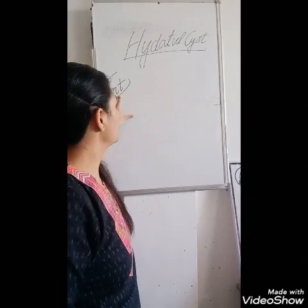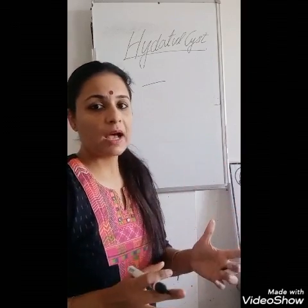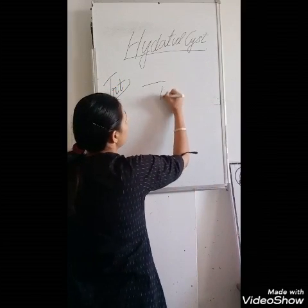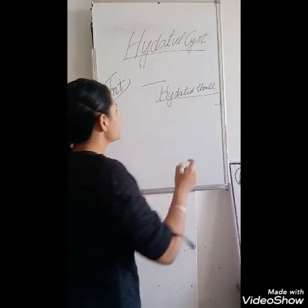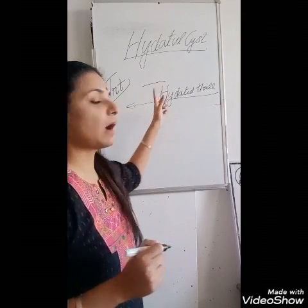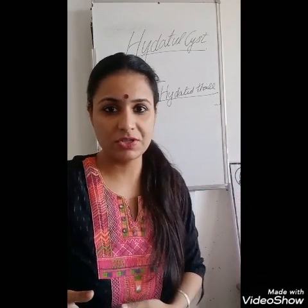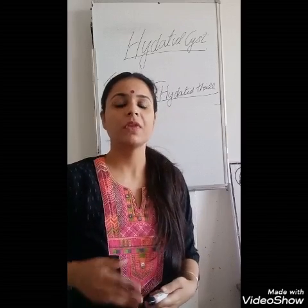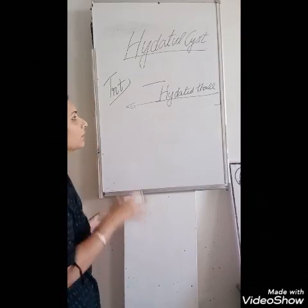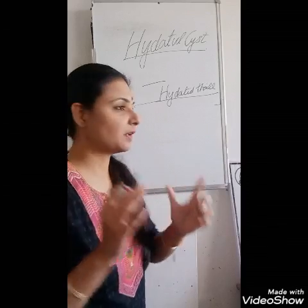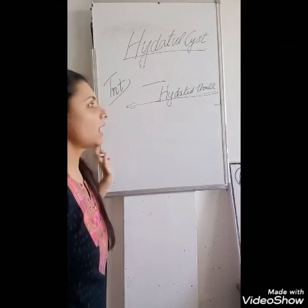Before describing the treatment of a hydatid cyst, I would like to share something very important — it could be asked in your practical exams — which is the hydatid thrill. It is a confirmatory sign for this disease. You apply three fingers over the region of the liver in the right hypochondriac region, then percuss with the middle finger, and you will get an impulse felt by the other two fingers. That impulse is created by the fluid inside the cyst. That is why it is called hydatid thrill.